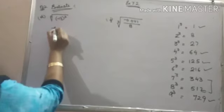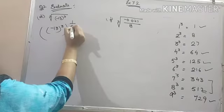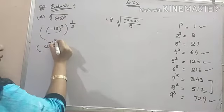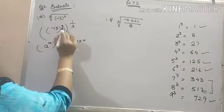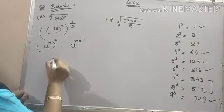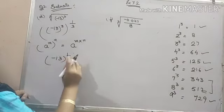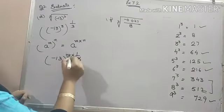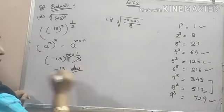This cube root means that whole raised to the power 1 by 3. And you know that a raised to the power m upon n is equal to a raised to the power m into n. That means these powers multiply themselves. So it will be equal to minus 13 raised to 3 into 1 by 3. Cancel it. It will be minus 13. This is your answer.